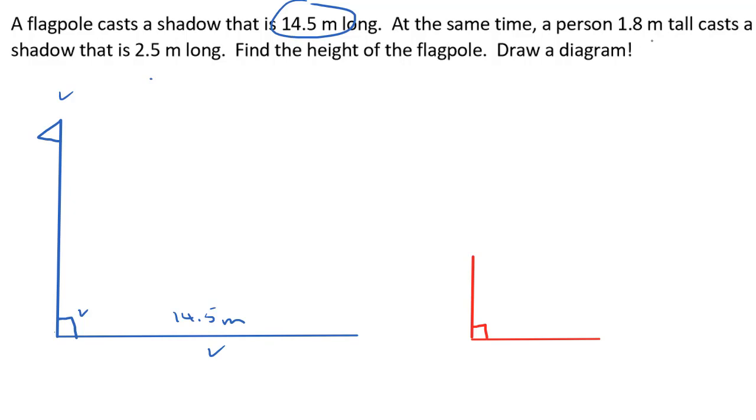I also know that I have a person that is 1.8 meters tall, so I'm going to write that right here on my diagram: 1.8 meters tall. And this person casts a shadow that's 2.5 meters long, so I can write that right there.